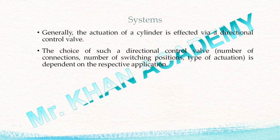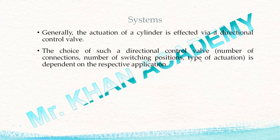Now let's start with the system — the second part of this video lecture. Generally, the actuation of the cylinder is affected via the direction control valve. If you want to use any cylinder, you need to select a proper direction control valve. The choice of direction control valve depends on the respective application — it may depend on number of connections, number of switching positions, and type of actuation — totally based on exactly what the application is.